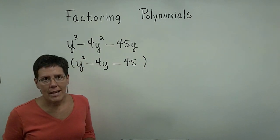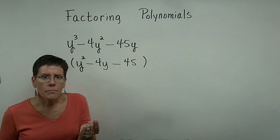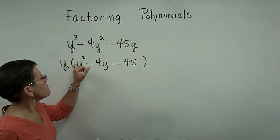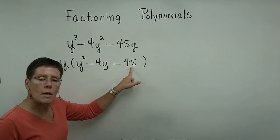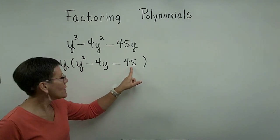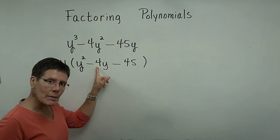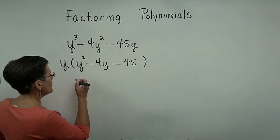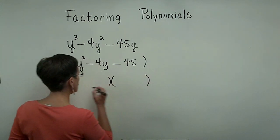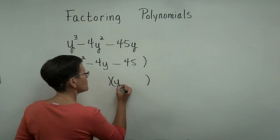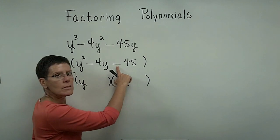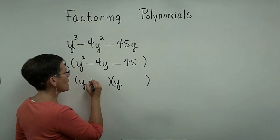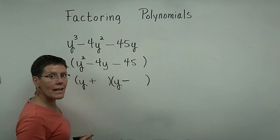Then step back and say: this is a trinomial with a 1 in front of the squared term. If I can find two numbers that multiply to be negative 45 and add to be negative 4, I can factor this further. I'll write down two sets of parentheses, put y in the front of each, and note that since the two numbers must multiply to negative 45, one has to be positive and one has to be negative.